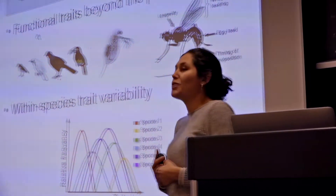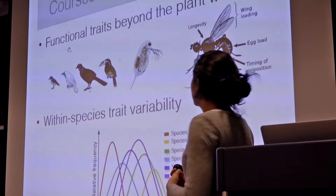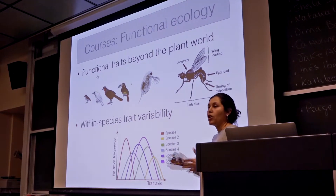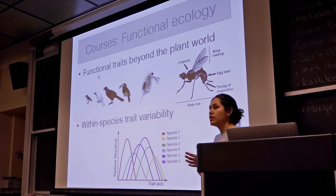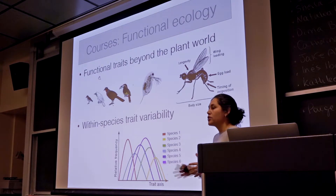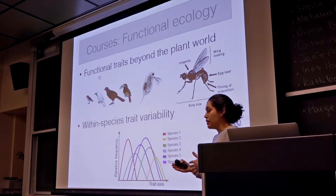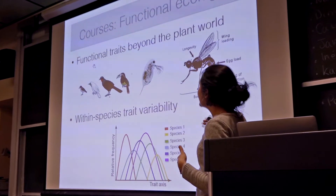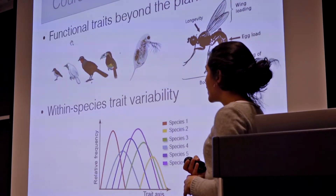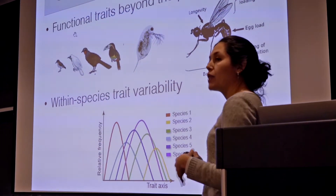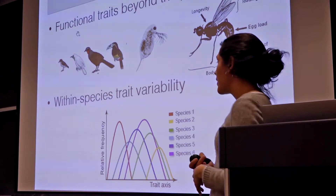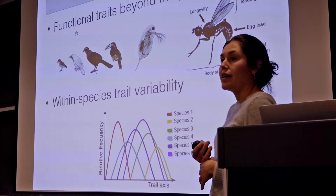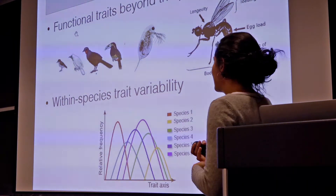I'm planning to teach a course in functional ecology next fall. The idea is to first revise and discuss what has been done in the area of functional ecology, and I'm planning to not only focus on plants but also integrate information on other systems and organisms. A second objective of the course would be to identify the main challenges this area is facing today, including the role of within- and across-taxa trait variation.